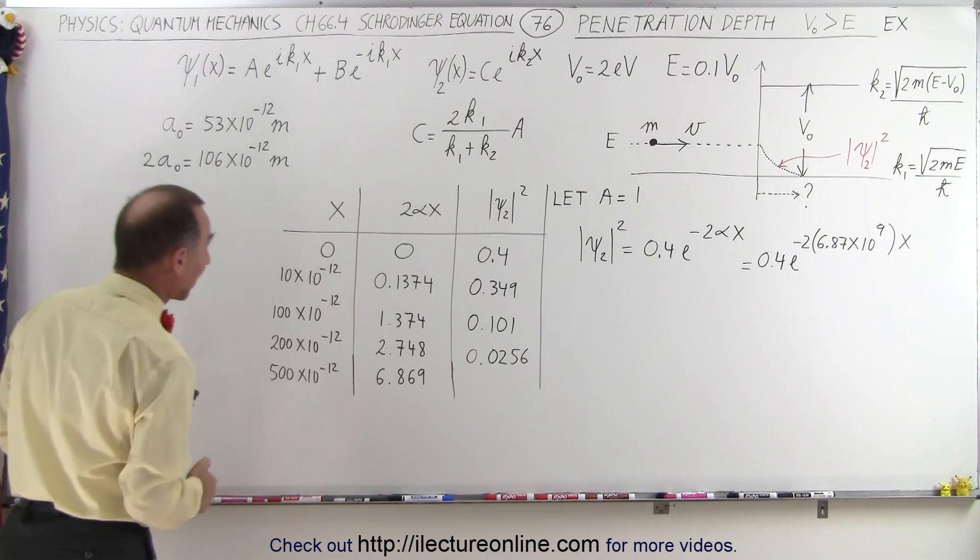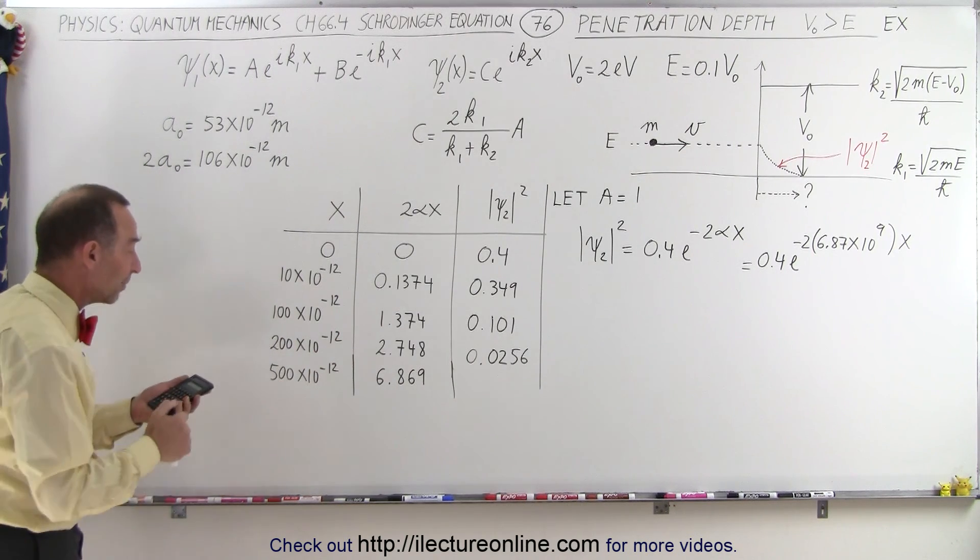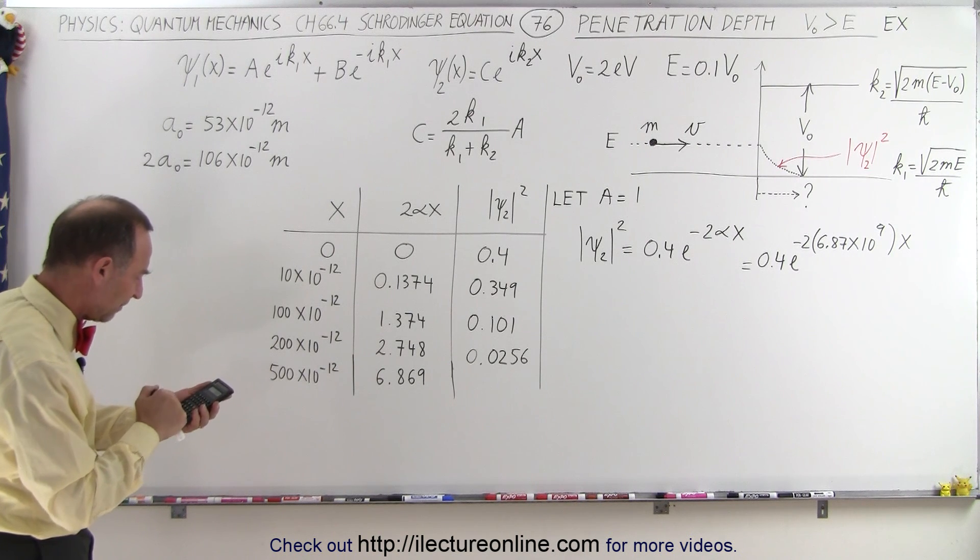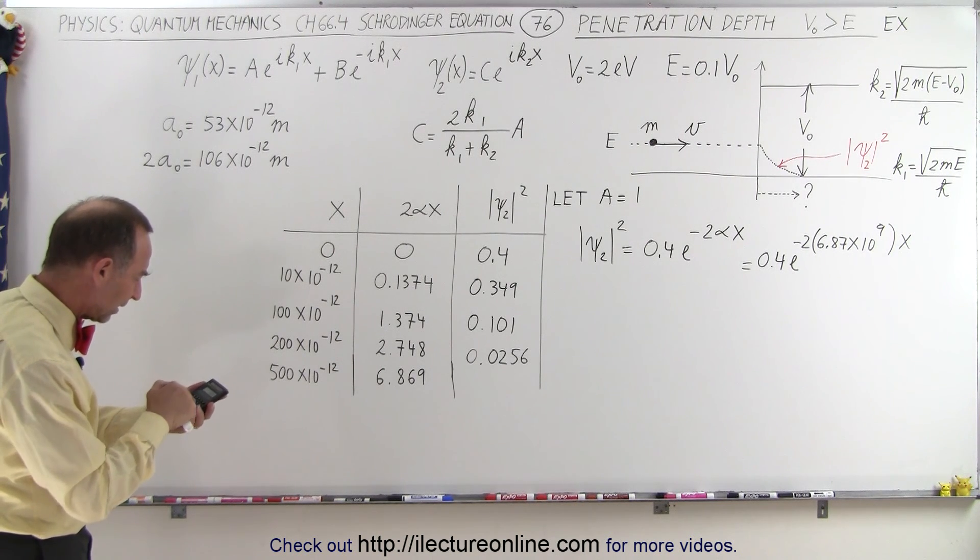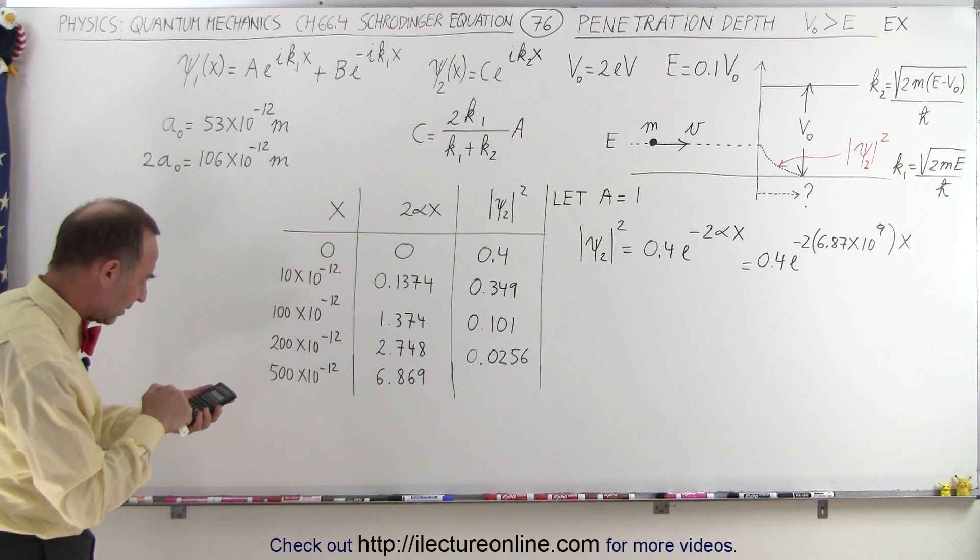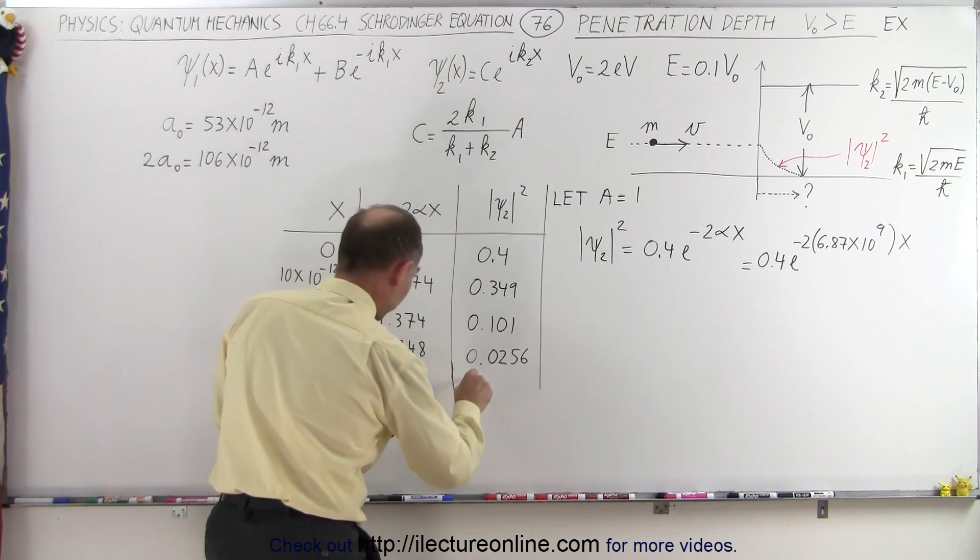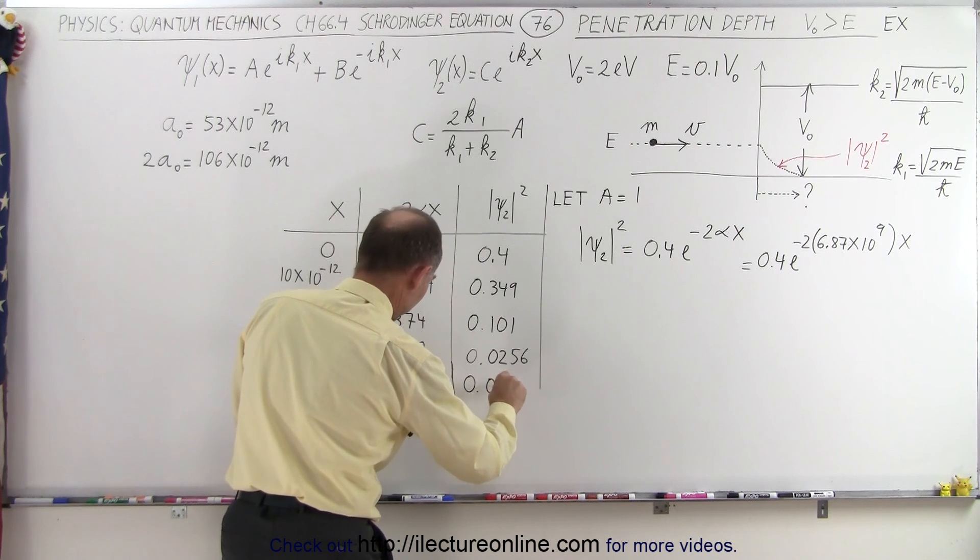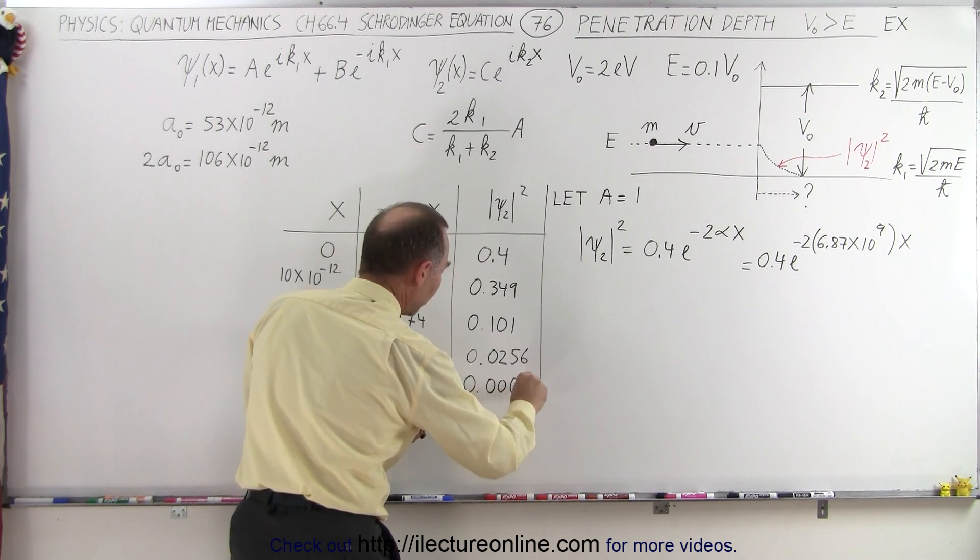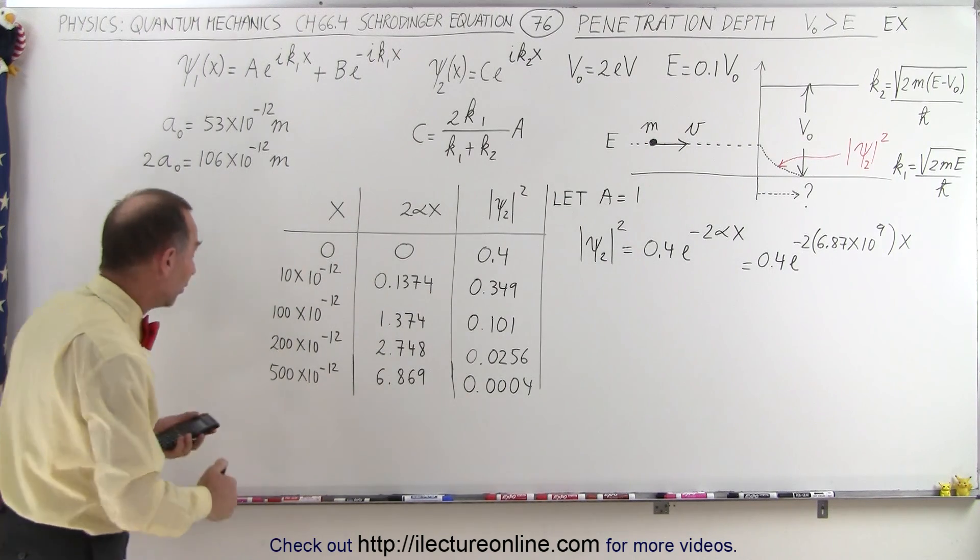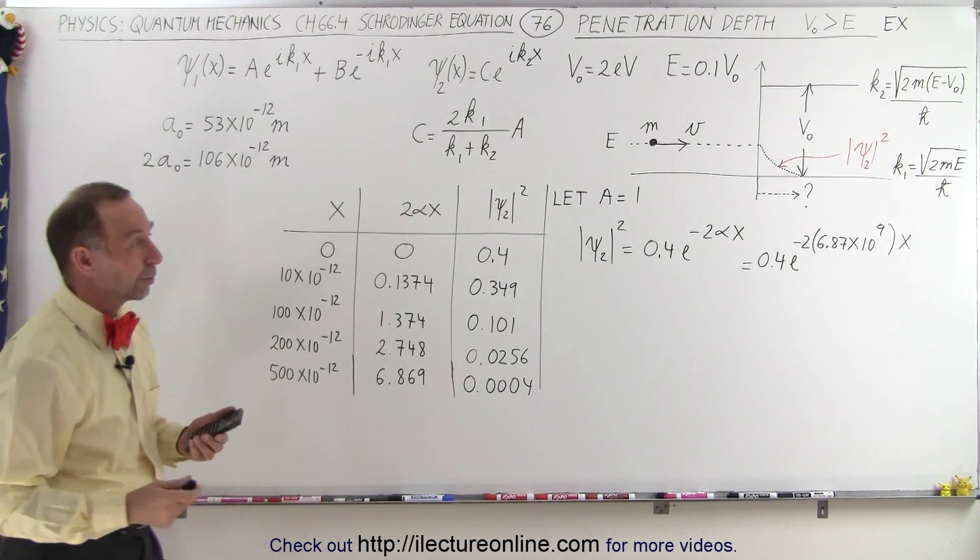And now let's go for five atom diameters. So we have 6.869, put a negative in front of that, make that the exponent, multiply times 0.4, and now we have something that's pretty small, 0.0004. So you can see that the probability is now almost zero when we get to five atom diameters. In other words, we don't expect the particle to go much further than five atom diameters into the potential step.